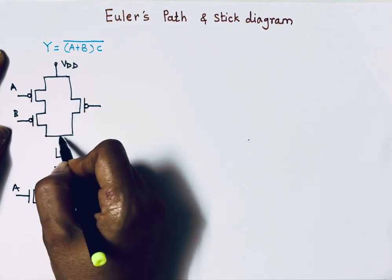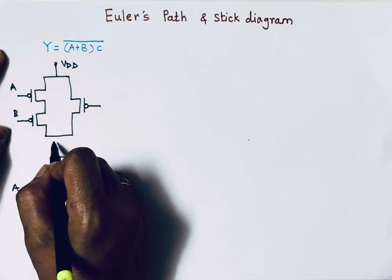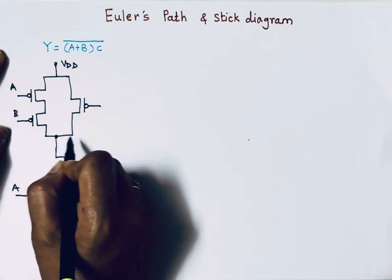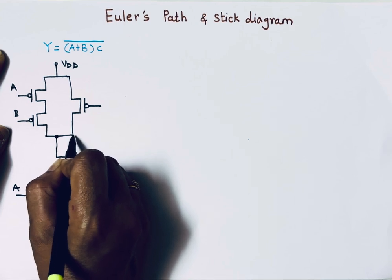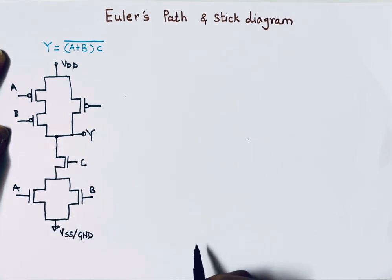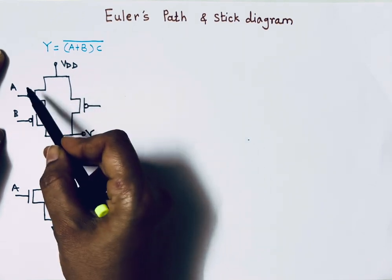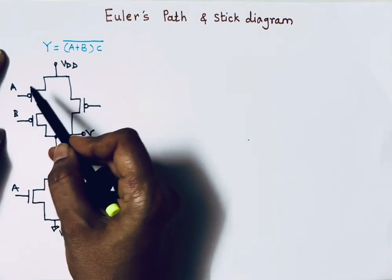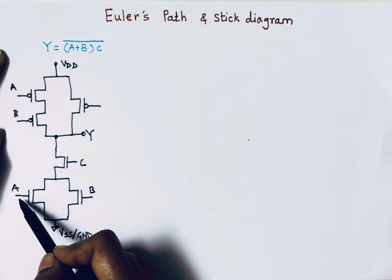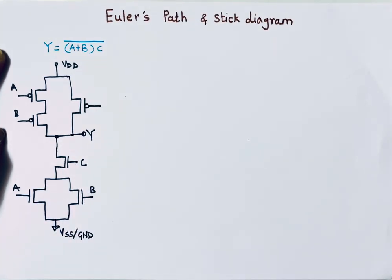This is my pull-up network and this is my pull-down network. The output Y is always taken at the center between the pull-up and pull-down networks. The pull-up network has three MOSFETs — A, B, and C — and the pull-down network also has three MOSFETs — A, B, and C.